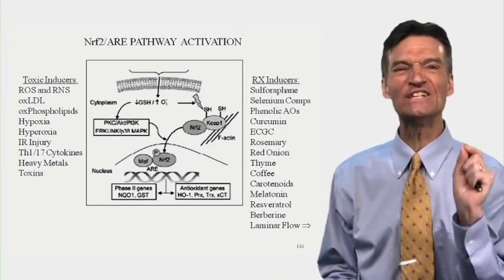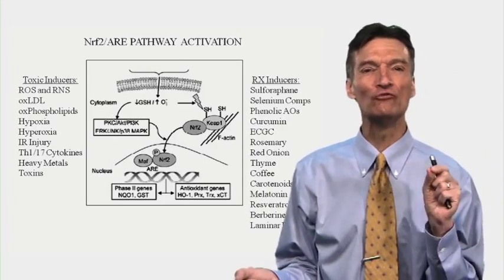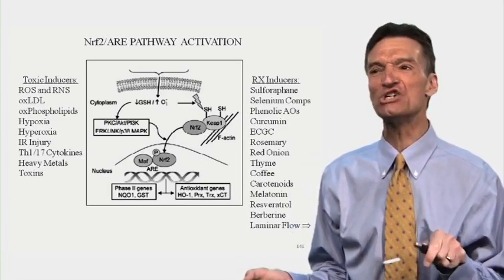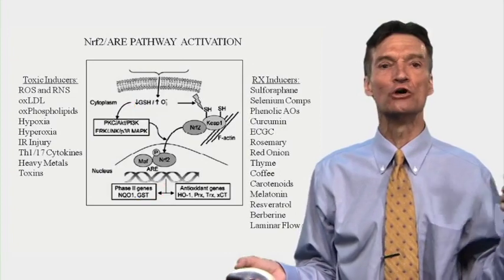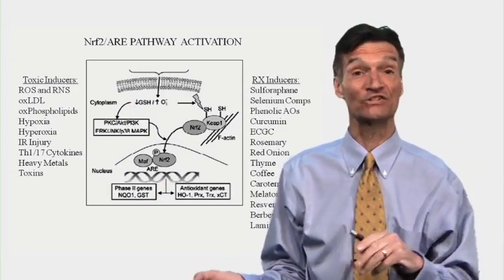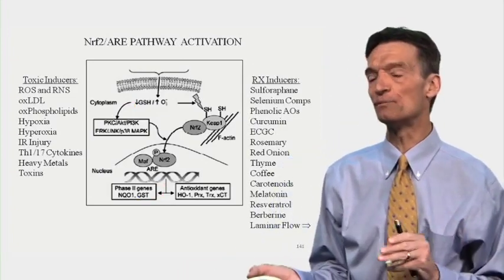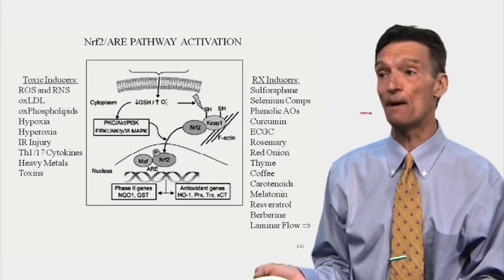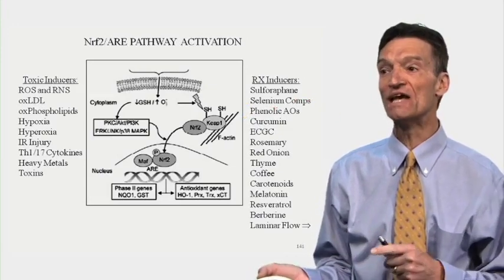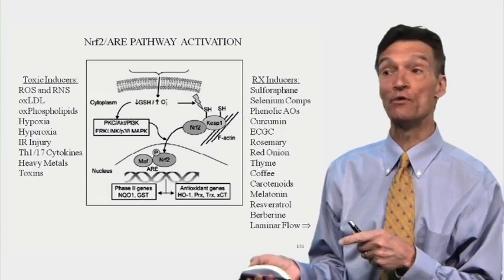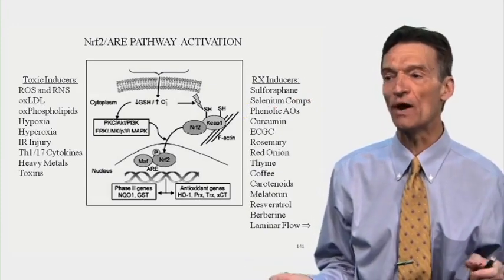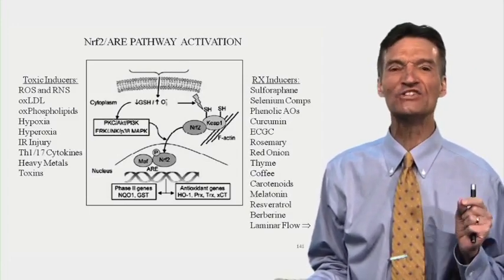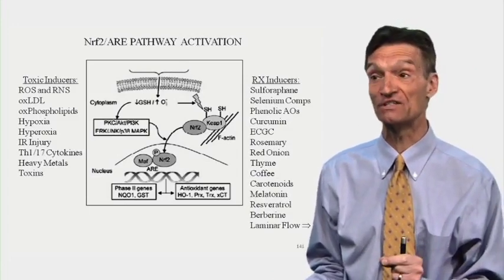Many nutritional supplements will fool the body into thinking we're experiencing toxic stress. They're not toxic, but they initiate Nrf2 translocation so you augment your antioxidant and antitoxicity defenses. Green vegetables — broccoli is rich in sulforaphane — selenium compounds, phenolic compounds, curcumin (turmeric), EGCG (epicatechin gallate found in tea and coffee), rosemary, red onion, thyme, coffee, carotenoids, melatonin, resveratrol, berberine, and laminar flow all activate Nrf2.